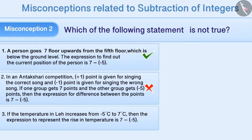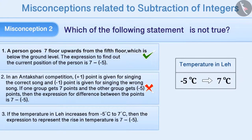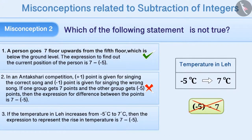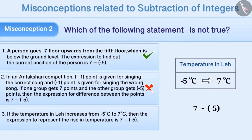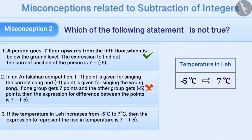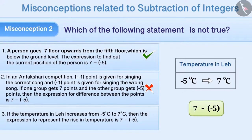The third statement says that the temperature rises from minus 5 degrees centigrade to 7 degrees centigrade. Sometimes, to find out the increase in temperature, the second number is subtracted from the first number. This is also a misunderstanding. Similarly, sometimes students understand that to find the increase, initial temperature is subtracted from the final temperature, but they simply ignore the signs, so the expression is written as 7 minus 5. This is also a misunderstanding. The correct understanding is that to find the increase, minus 5 degrees centigrade should be subtracted from 7 degrees centigrade. That means the expression will be 7 minus minus 5. Since the given statement represents the correct statement, this also cannot be the answer to the given question.